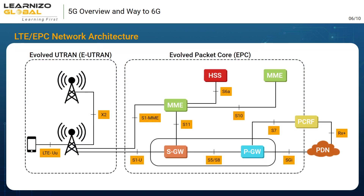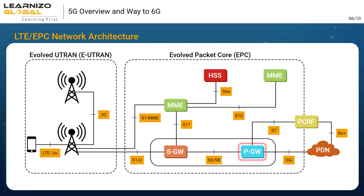In 4G networks, we only have packet switching. Node B and RNC functionality are combined in 4G, and the new node is called E Node B. SGSN functionality of 3G is divided into two parts: MME, which does the control plane signaling, and SGW, which does the user plane part and manages traffic. PGW comes in place of GGSN of 2G and 3G networks. HSS replaces the HLR of 2G and 3G networks. PCRF is a node defined to manage quality of service and charging rules.